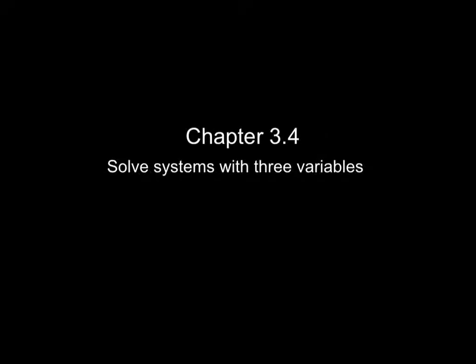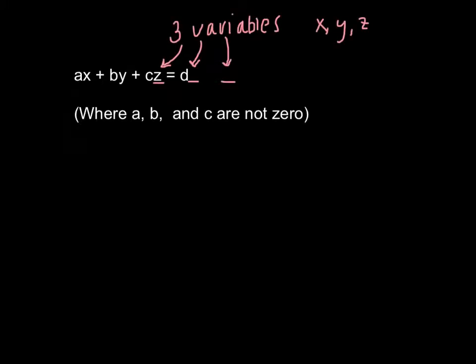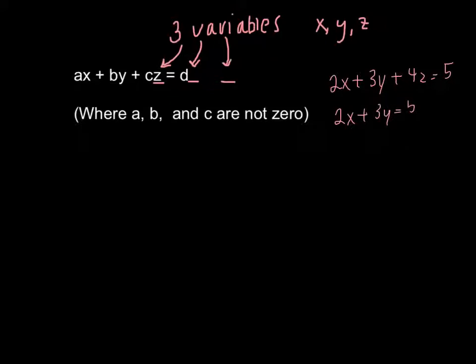We're going to be covering chapter 3.4, Solve Systems with Three Variables. The three variables are x, y, and z. These appear in the formula ax plus by plus cz equals d, where a, b, and c are not zero. For example, we could have 2x plus 3y plus 4z equals 5. This looks similar to something with just two variables, like 2x plus 3y equals 5, but now we're introducing the third variable, z.